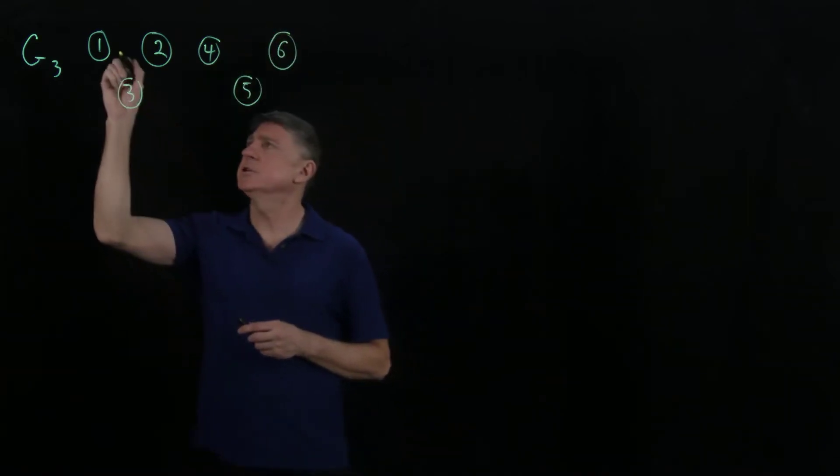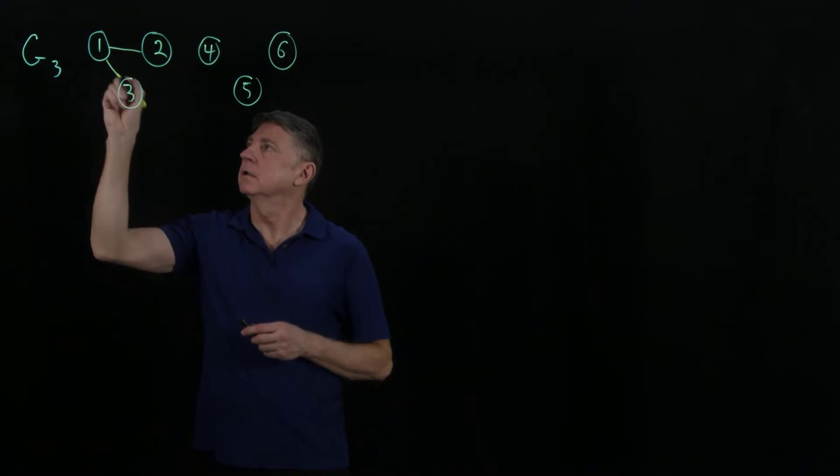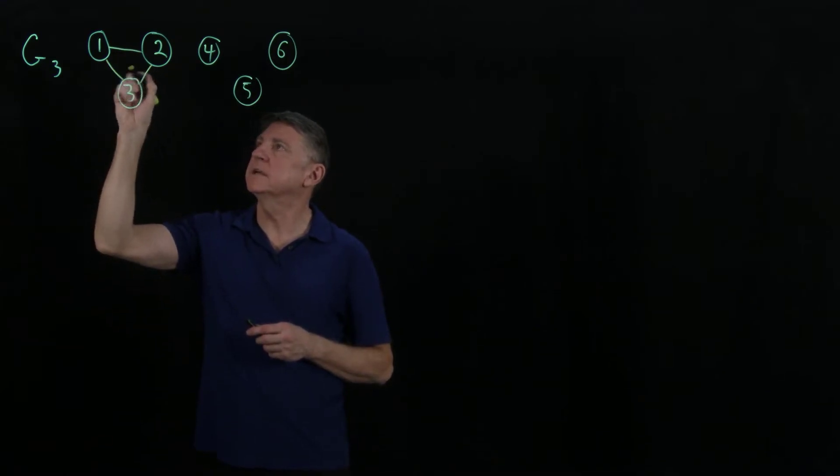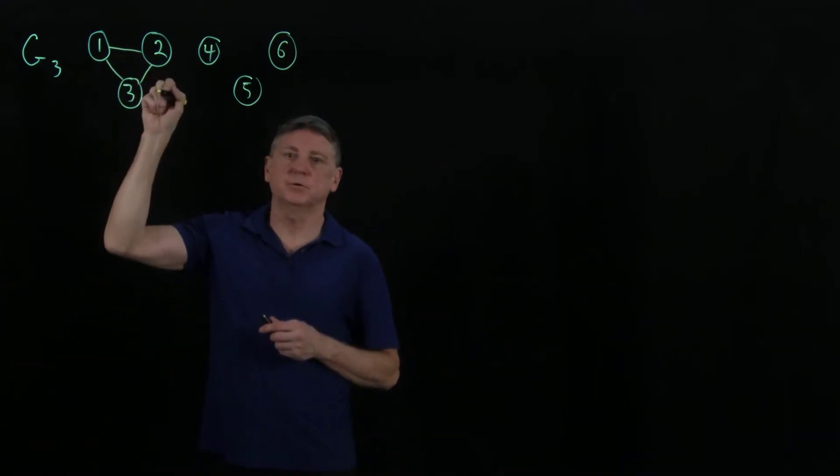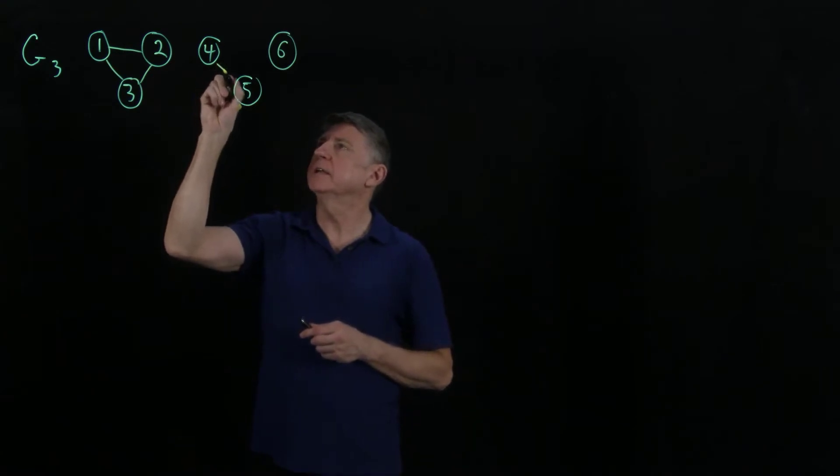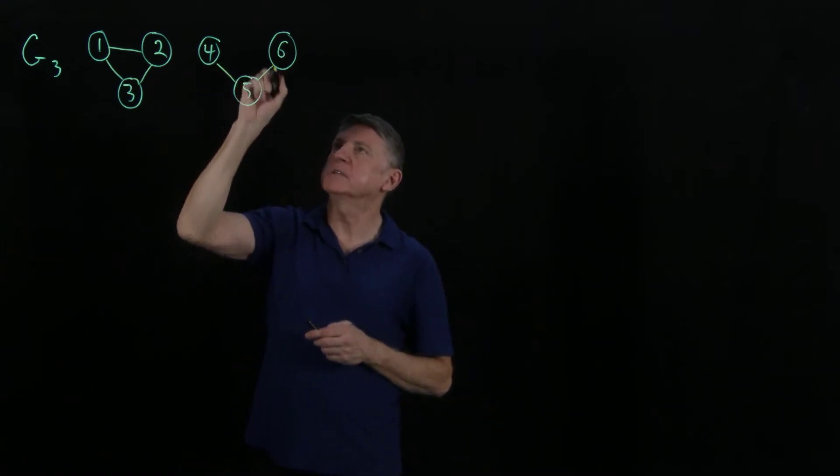And suppose that the edges are these, that 1 is connected to 2, 1 to 3, 2 to 3, 4 is connected to 5, and 5 is connected to 6.